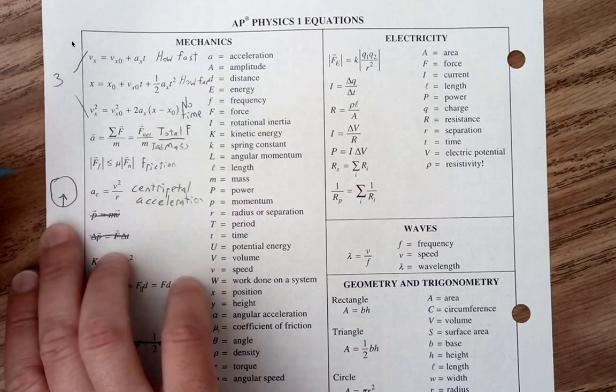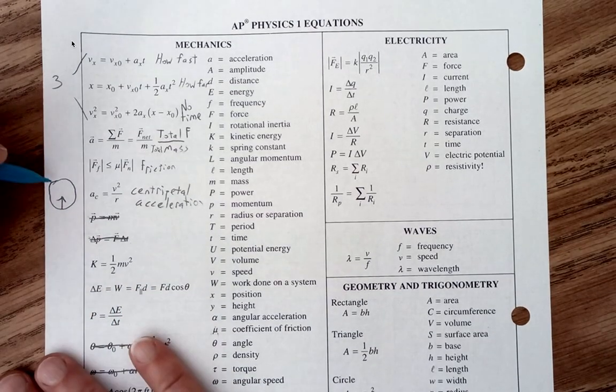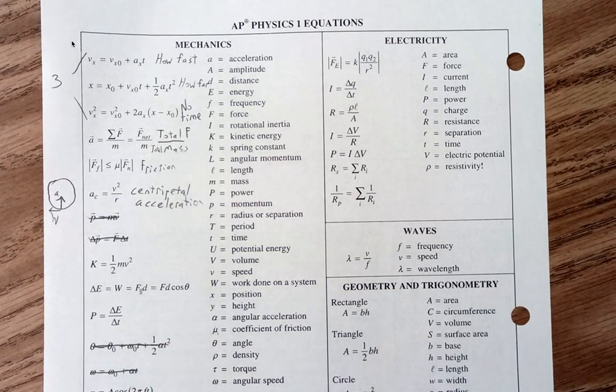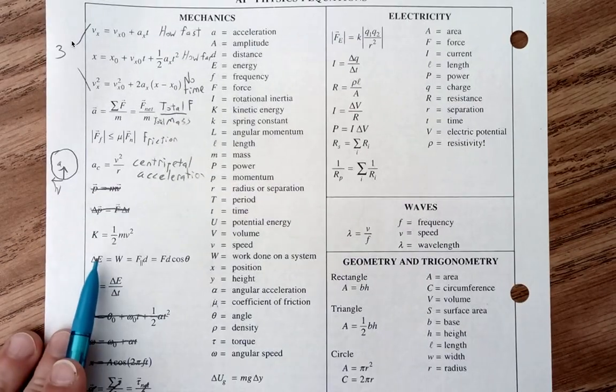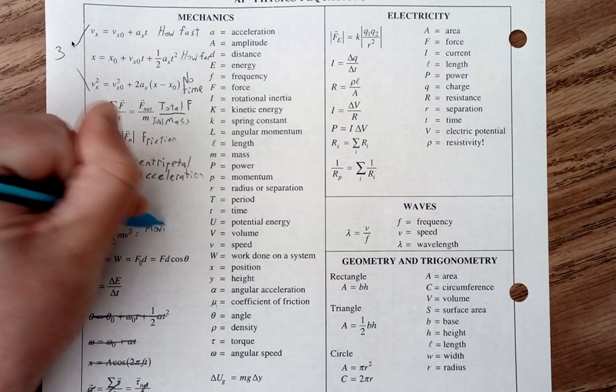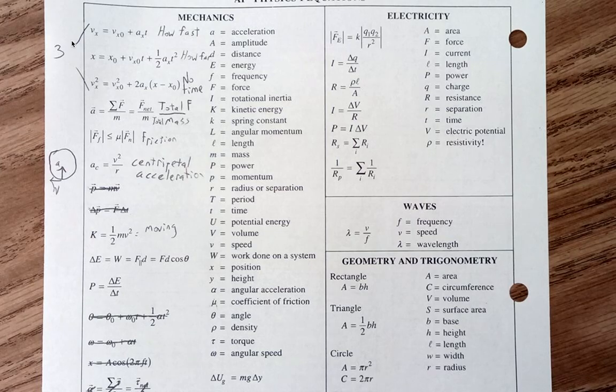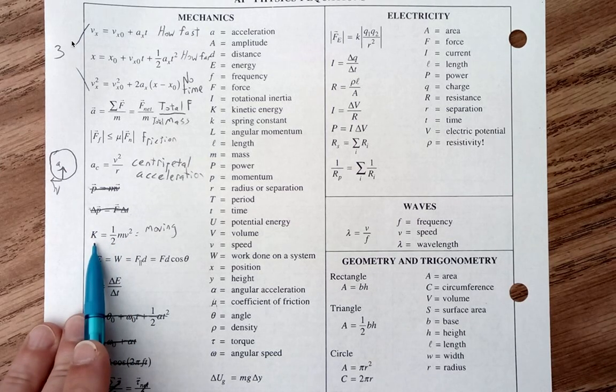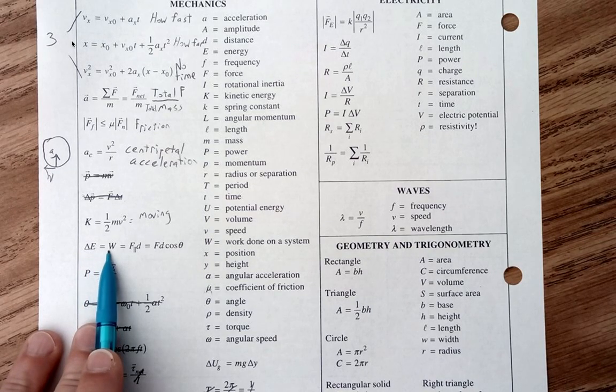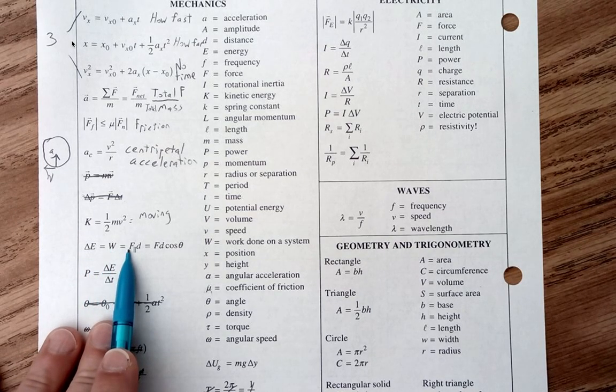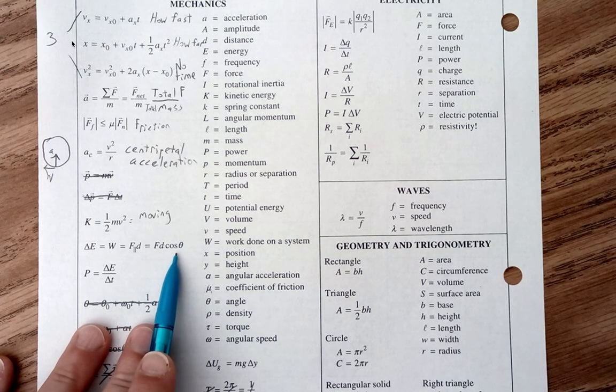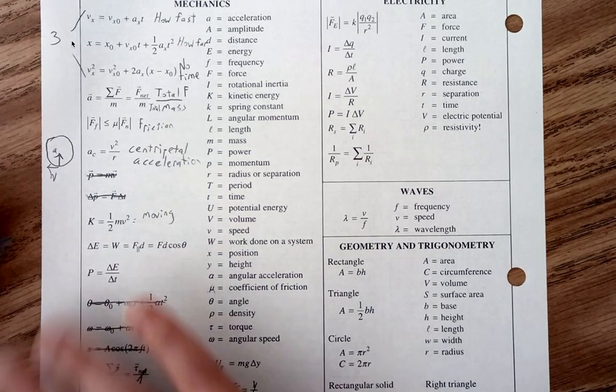Our centripetal acceleration is this v squared over r. Recall it's centripetal because it's always pointed towards the center. So if I have something moving with a velocity, that acceleration is always pointed towards the center. This is our moving energy, that kinetic energy has to be when something is moving. We have this one half mv squared as this kinetic, and then we can change this kinetic energy by doing work on the system, which is a force times a distance, or this force times this distance times this cosine of theta.